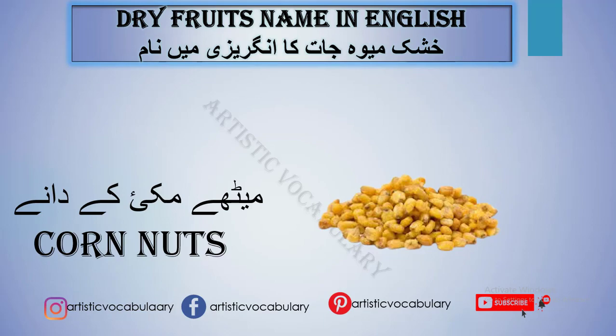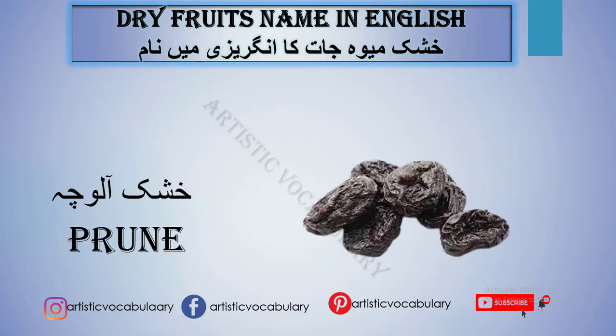Next we have Meethe Makai ke Dane. These are corn kernels that are sweet and are called Corn Nuts in English. Corn means Makai, and Corn Nuts means sweet corn seeds. Next we have Khushk Aloocha, which we call Prunes.